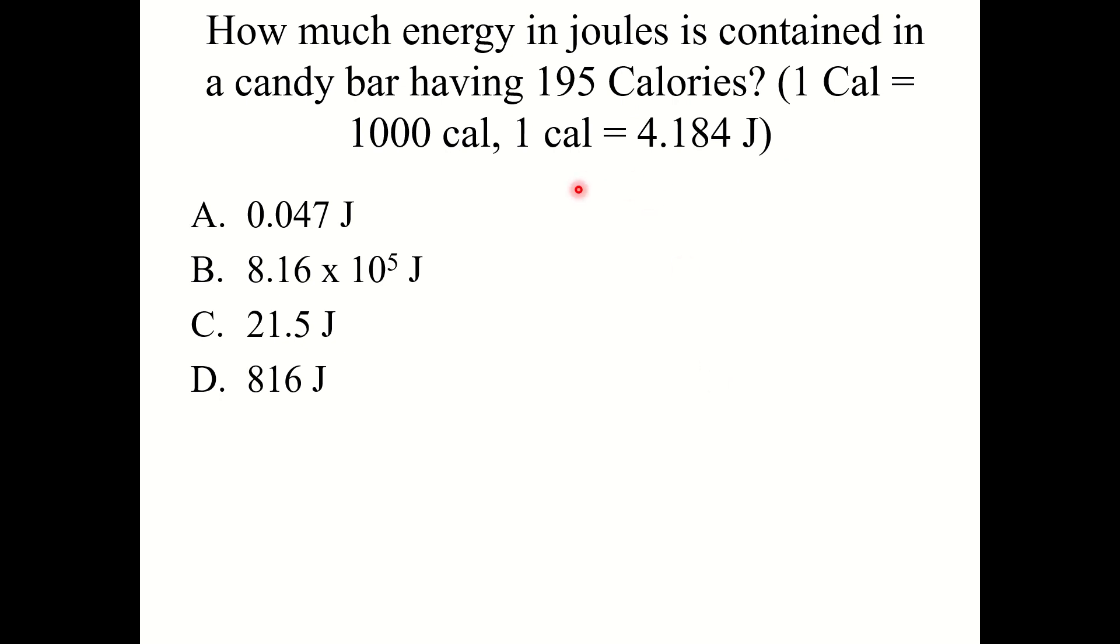All right, and the correct answer here is B, 8.16 times 10 to the fifth joules. This is a capital C calorie. So first you want to convert this to a lowercase c calorie by multiplying by a thousand. So you've got 195,000 calories, and then convert to joules using this conversion factor.